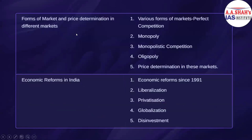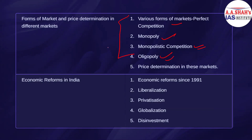Then we will study different forms of market — four forms: perfect competition, monopoly, monopolistic competition, and oligopoly. We will learn how price is determined in each of these four markets. After that, we will cover India's economic reforms — liberalization, privatization, and globalization, known as LPG — along with disinvestment.